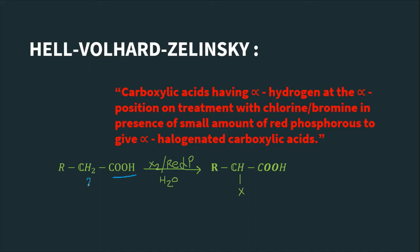On treating with chlorine or bromine, that is halogens, in presence of small amount of red phosphorus to give alpha halogenated carboxylic acids. This is a carboxylic acid which is alpha halogenated - one hydrogen is replaced by halogen.